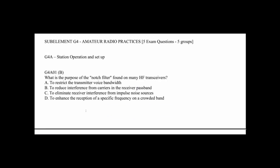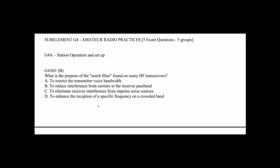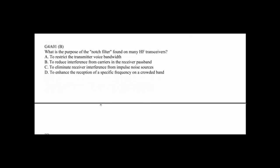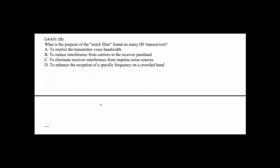G4A01: What is the purpose of the notch filter found on many HF transceivers? That's easy, it's to reduce interference from carriers or tones in the receiver passband. So you have another CW signal in the passband of your receiver. If you want to eliminate that one guy, you can do that with the notch control. It's extraordinarily effective. G4A02: What is one advantage of selecting the opposite or reverse sideband when receiving CW signals on a typical HF transceiver? The answer is C, it may be possible to reduce or eliminate interference to other signals.